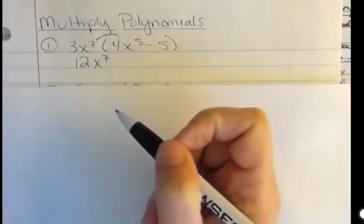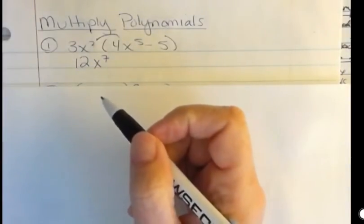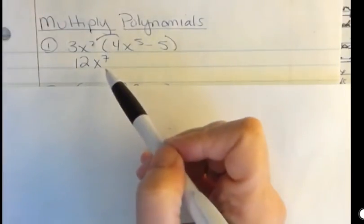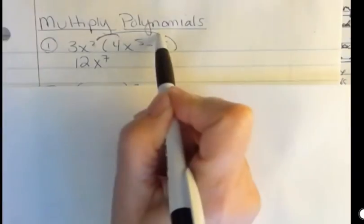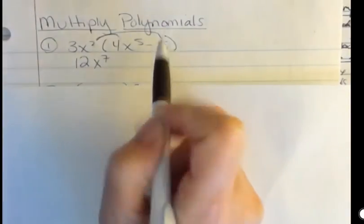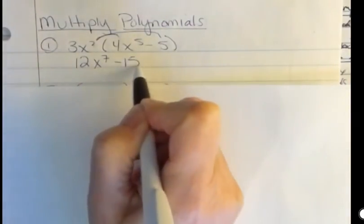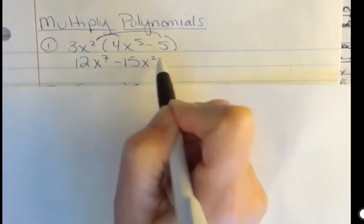Remember, you can only add and subtract like terms, but that's not true for multiplying and dividing. Only like terms are important for addition and subtraction. And then I'm going to multiply this: I got 3 times negative 5 or negative 15, and I have the x to the 2nd power.